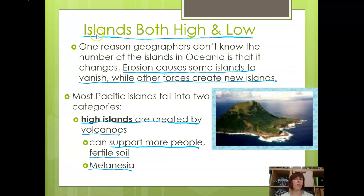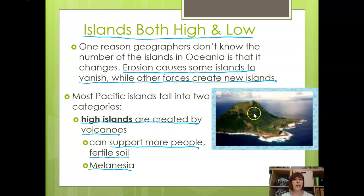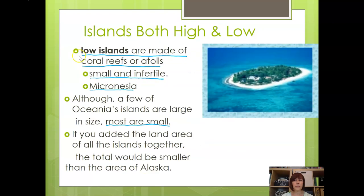There are different kinds of islands — both high islands and low islands. One reason geographers don't know the exact number of islands in Oceania is that the number changes: erosion causes some islands to vanish while volcanic forces create new ones. High islands are created by volcanoes, can support more people, and have more fertile soil — the islands of Melanesia, for example. Low islands are made mostly of coral reefs or atolls; they're small and infertile and include many islands of Micronesia.